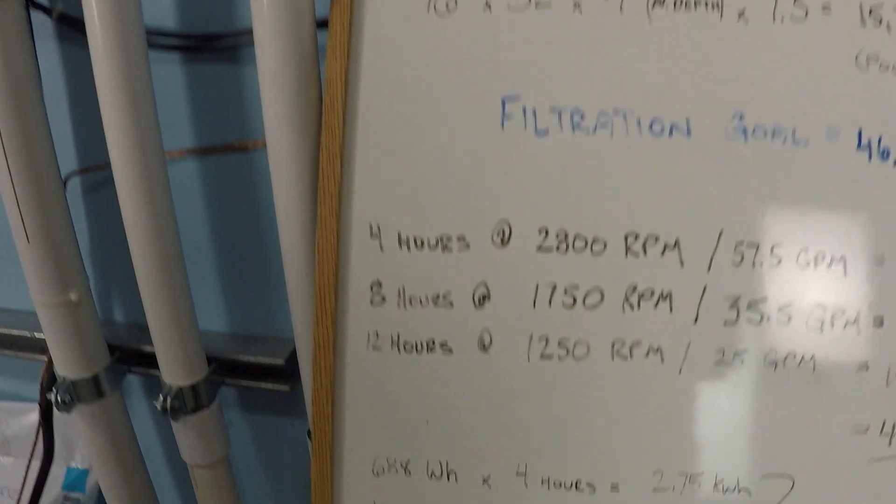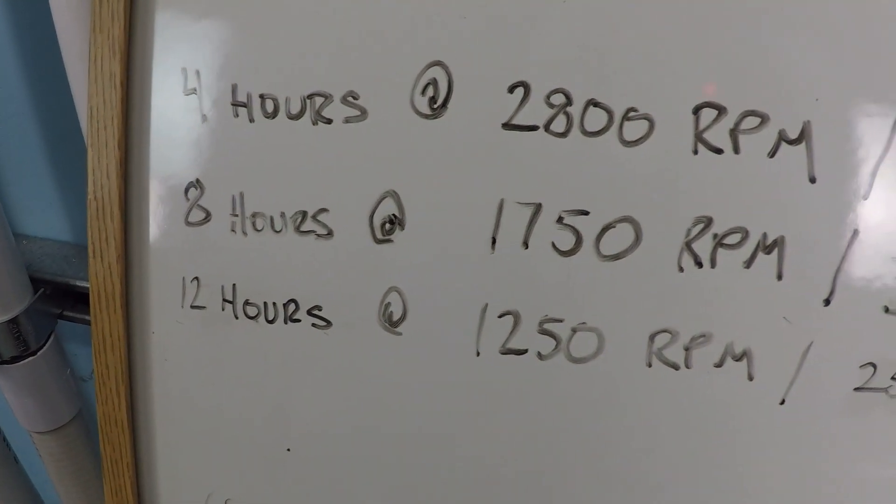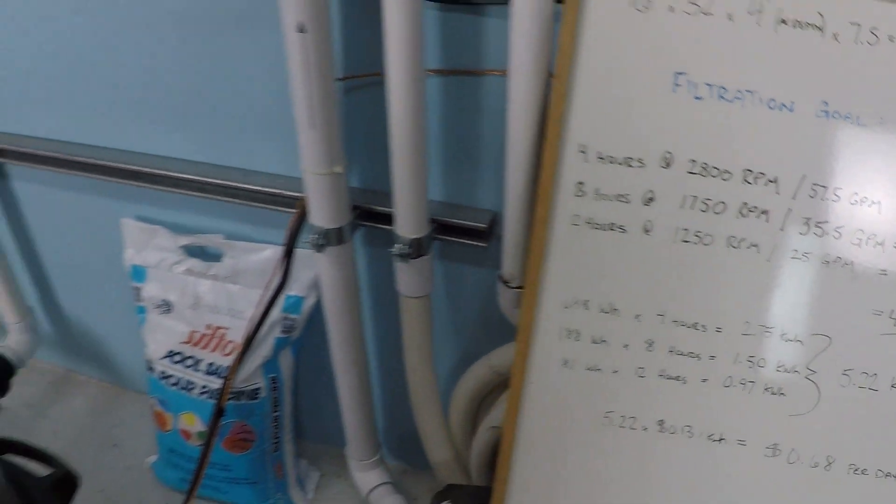And you can see that reflected here. So let's go ahead and jump up to the next RPM setting that we're going to have, which is 8 hours a day at 1,750 RPM.